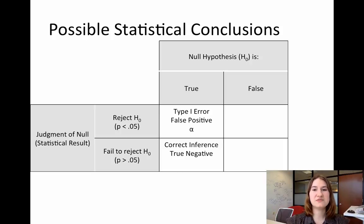On the other hand, if the null hypothesis is true and we fail to reject the null hypothesis, we've made a correct inference. It's a true negative. Our statistical test is saying we can't reject the null hypothesis, and the null hypothesis is true. So it's a true negative.